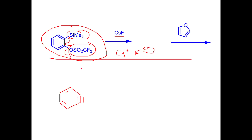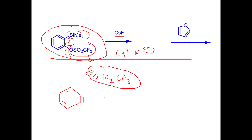The CF₃ group stabilizes the O⁻ that is formed when the silicon–carbon bond breaks. We get benzyne, and the oxygen then dissociates to form O⁻SO₂CF₃. This is a very good leaving group because of the attachment of the trifluoro group along with the SO₂ group. This makes the group a very good leaving group, which is why benzyne is generated despite being unstable and very reactive.